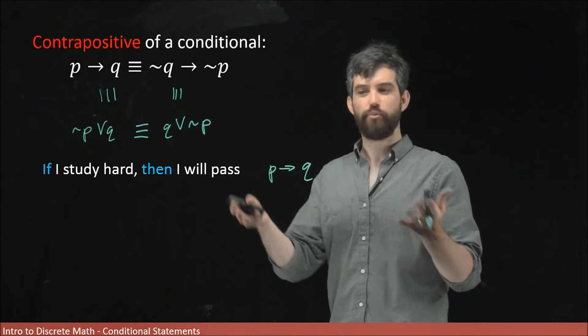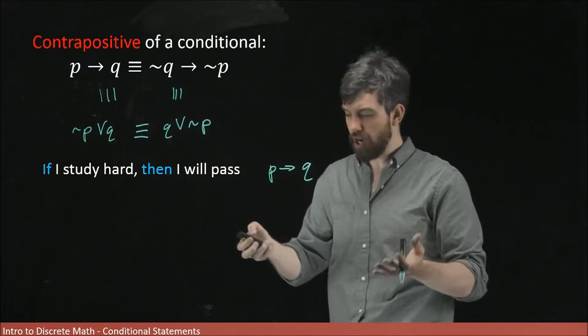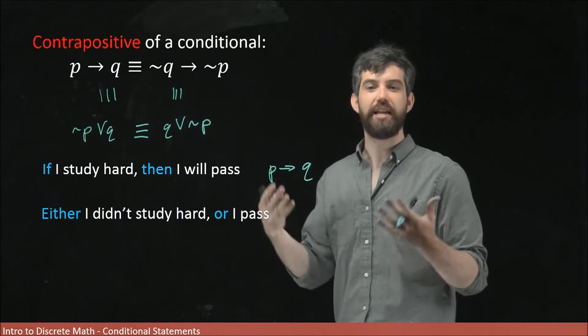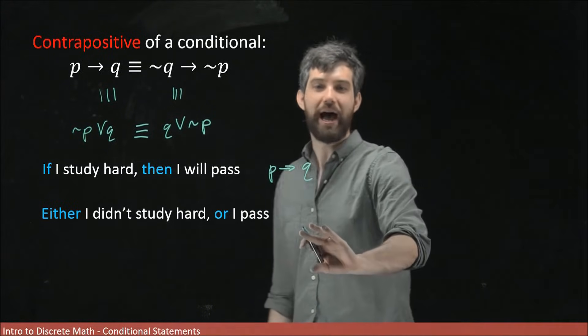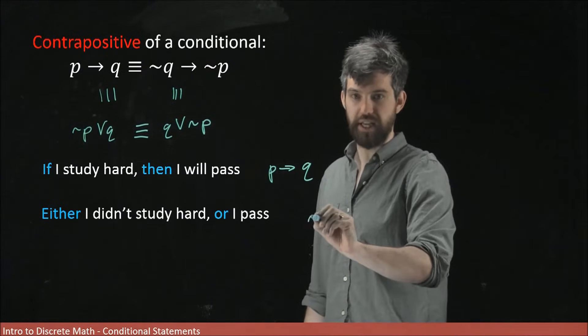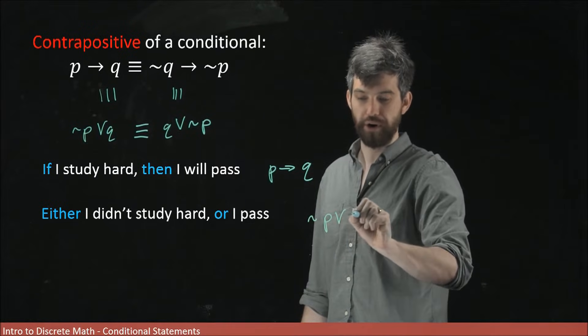And then we know that we can rewrite the statement in its disjunctive form using an or statement saying either I didn't study hard or I'm going to pass. And so I'm going to put this as the not P or Q form.